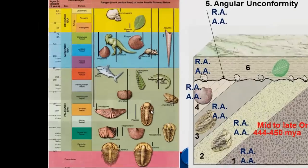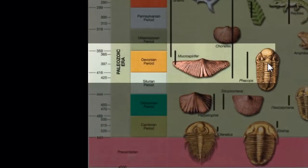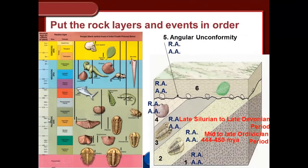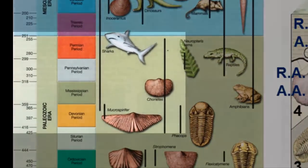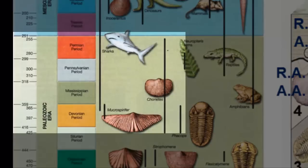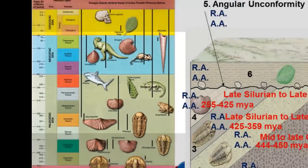Rock layer three brings us back to Phacops, which we just covered — late Silurian to late Devonian, 425 to 395 million years ago. We also have a bivalve in this layer with a very large range, so the best we can say for this limestone layer is late Silurian to late Permian — anywhere from 255 to 425 million years ago.